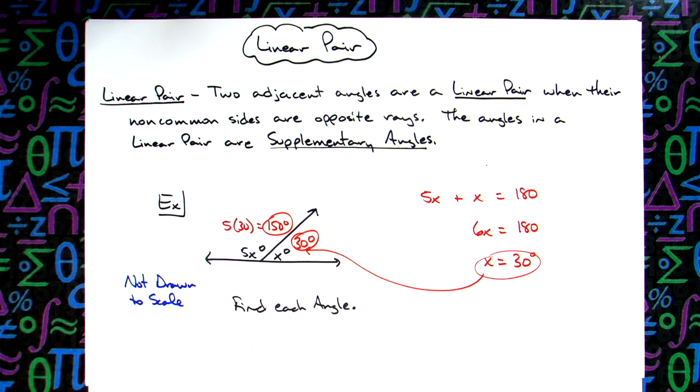So definitely just a short quick example here. Defining a linear pair, making that connection between the fact that a linear pair, the angles in that linear pair are supplementary angles, and you can use that fact then to find those two angles.